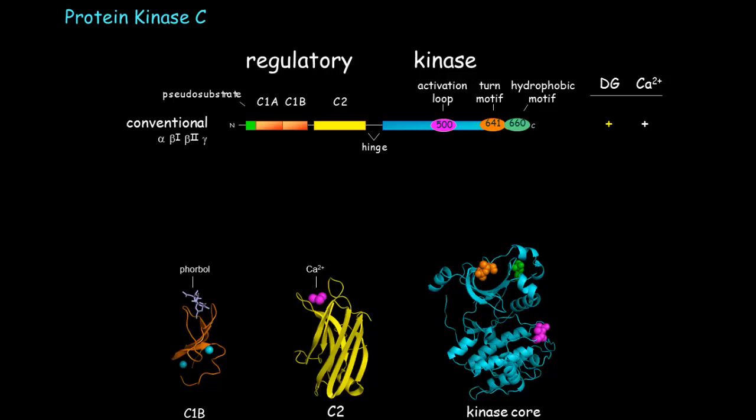All the protein kinase C family members have a kinase domain at the carboxy terminal half that does the chemistry, and a regulatory moiety that has the lipid second messenger or calcium sensing modules. In the case of conventional protein kinases, they have tandem C1A, C1B domains that are the diacylglycerol sensor and a C2 domain that binds calcium, and this allows it to bind to the plasma membrane. The structures of these modules are shown below.